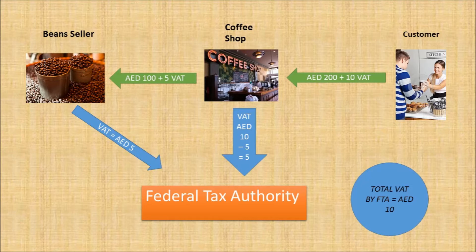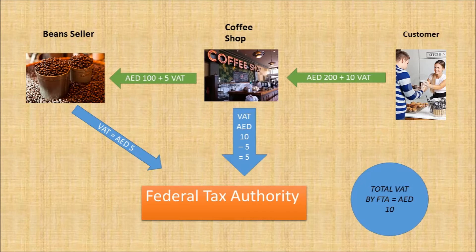You can also see the Federal Tax Authority. This is a new organization in the UAE and the purpose of this organization is to deal with tax-related matters such as VAT. Now, as you can see in the picture, the coffee shop receives 200 dirhams plus 10 dirhams VAT from the customer — this 10 dirhams is the output tax. The coffee shop also pays 100 dirhams to the bean seller plus 5 dirhams VAT — this 5 dirhams is the input tax.